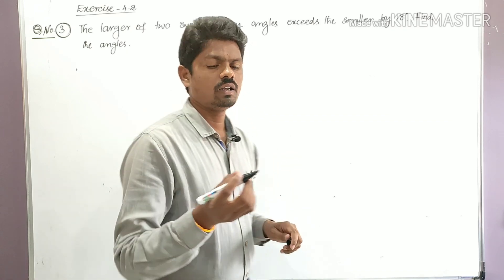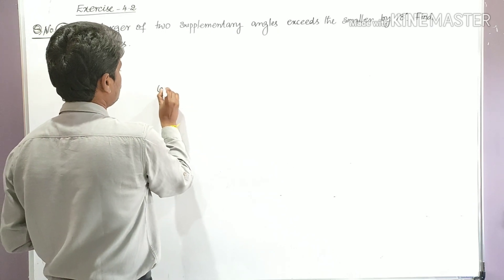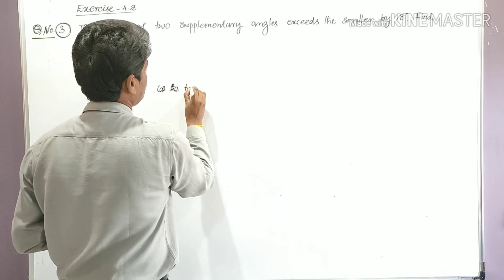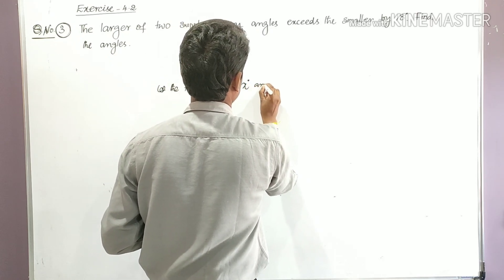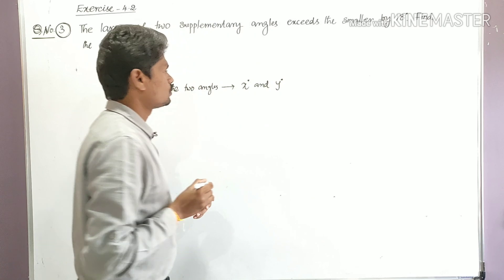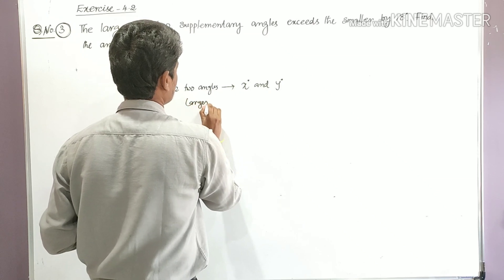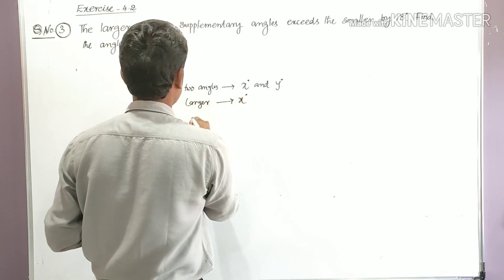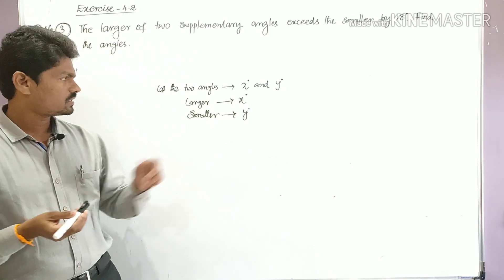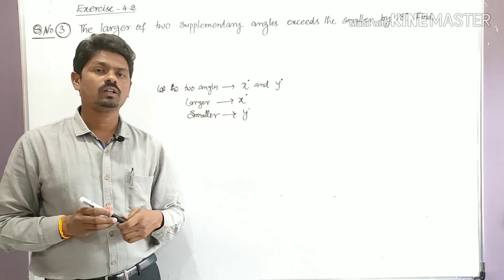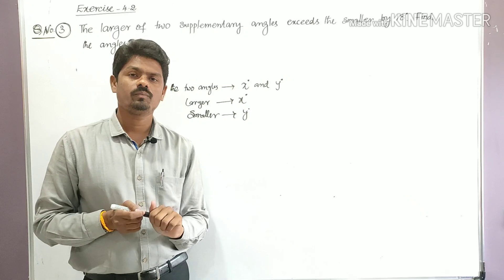Let the two angles be x and y. Let the larger angle be x and the smaller angle be y. So we assign x to the larger and y to the smaller angle.